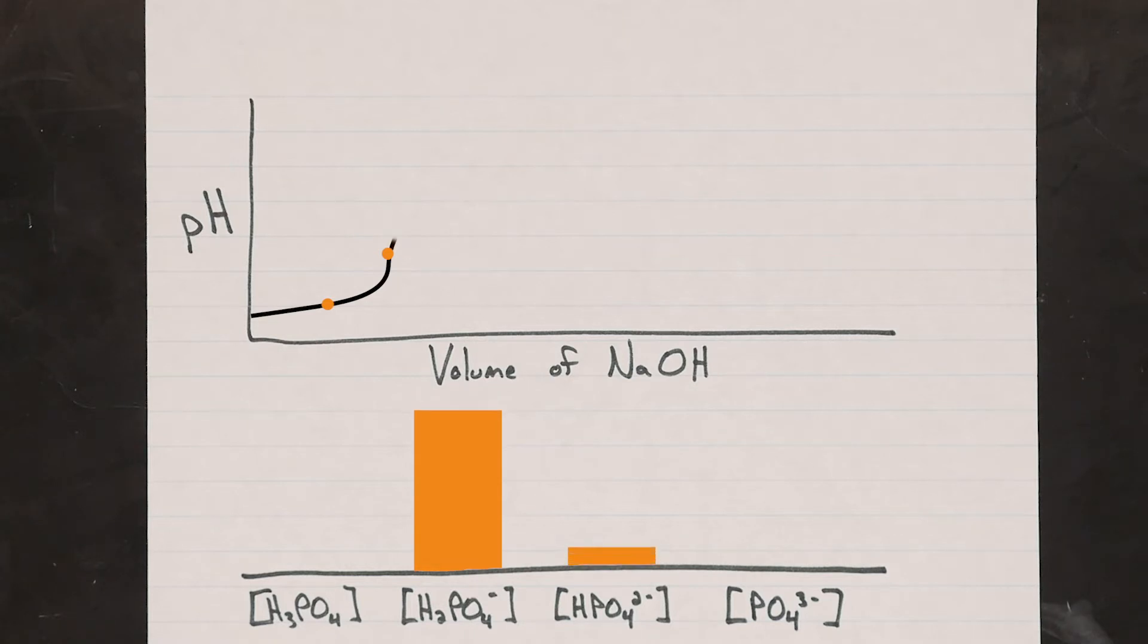Continuing on, we'll now be turning our dihydrogen phosphate into hydrogen phosphate and approaching yet another half-neutralization point. This would be the point at which our concentrations of dihydrogen phosphate and hydrogen phosphate are now the same and will also give us our second pKa value. Since there are three protons to lose, there are essentially three steps to this plot, and we'll be left with something that looks like this.